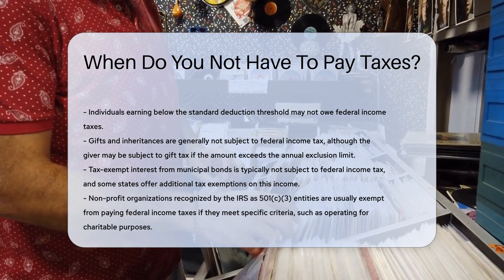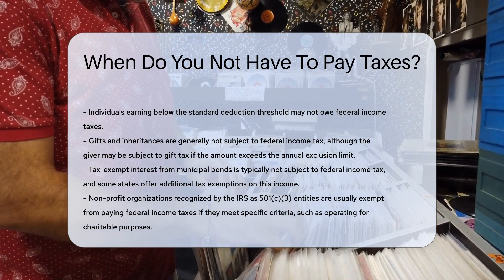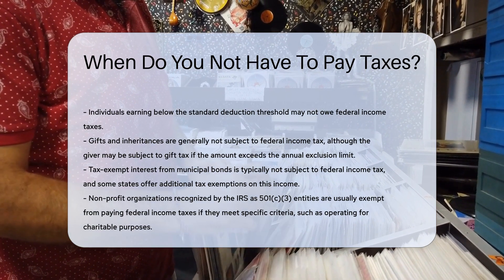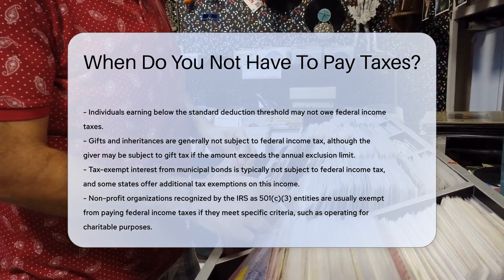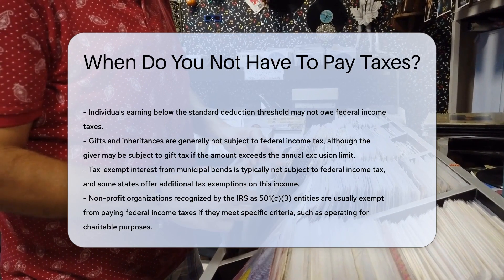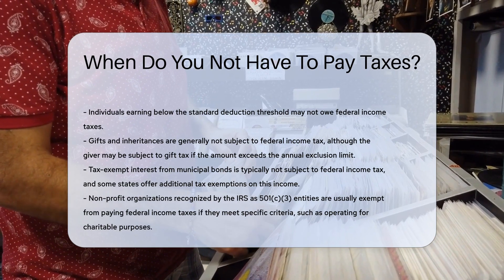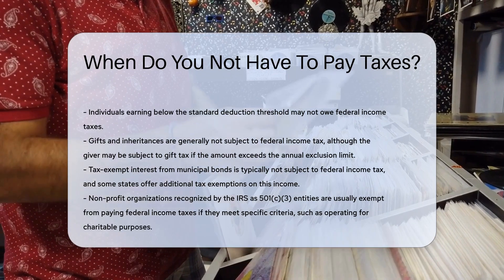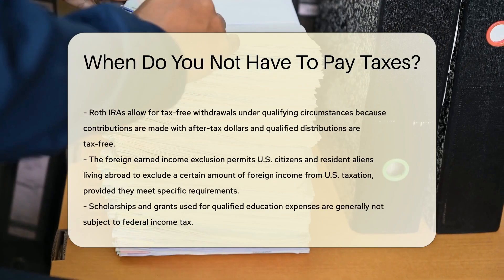Certain types of income are also exempt from taxation. For example, gifts and inheritances are generally not subject to federal income tax. However, the giver may be subject to gift tax if the amount exceeds the annual exclusion limit.